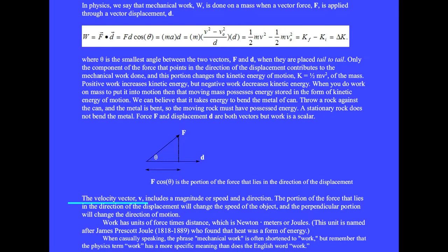The velocity vector v includes a magnitude or speed and a direction. The portion of the force that lies in the direction of the displacement will change the speed of the object, and the perpendicular portion will change the direction of motion. Work has units of force times distance, which is newtons times meters, or joules.